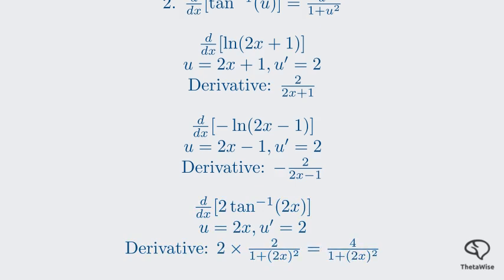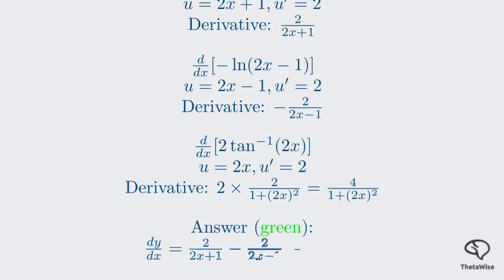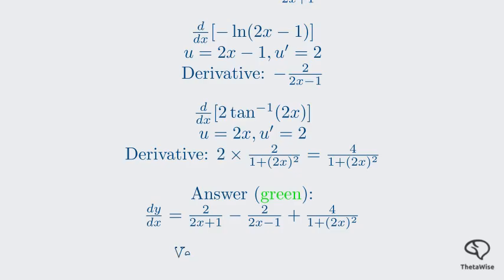Now we combine these three derivatives to get our final answer: dy/dx equals 2 over 2x plus 1, minus 2 over 2x minus 1, plus 4 over 1 plus 2x squared. Since the question said simplification is not required, we leave the answer in this form. The memo gives a slightly different-looking answer because they didn't use the logarithm property first, but our answer is mathematically equivalent and correct. Our answer is verified.